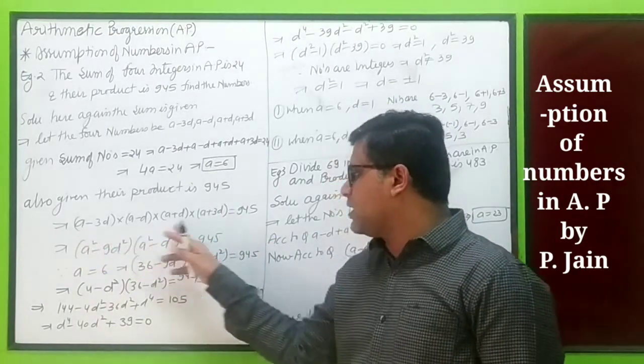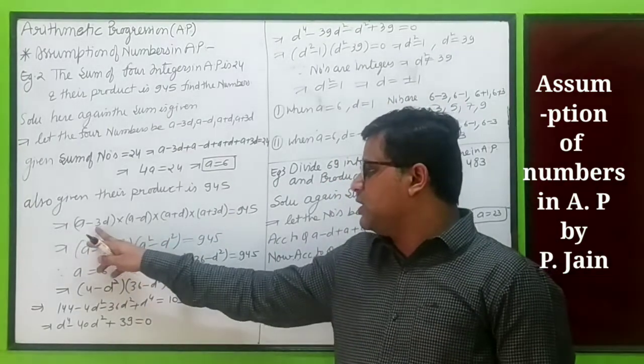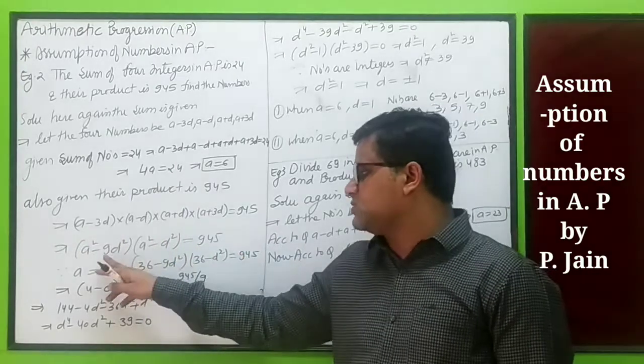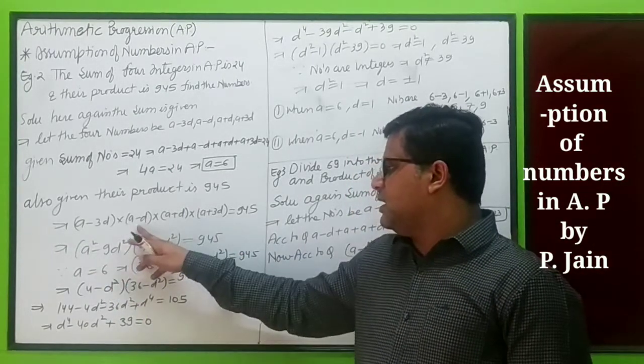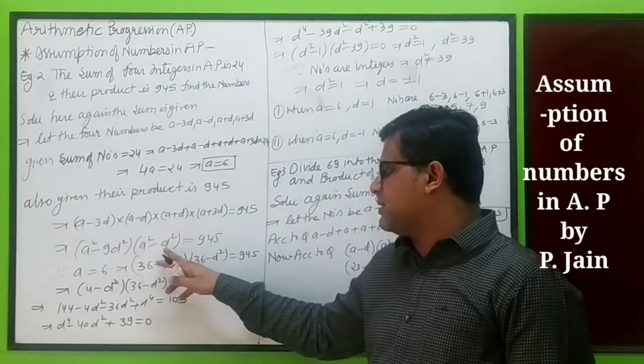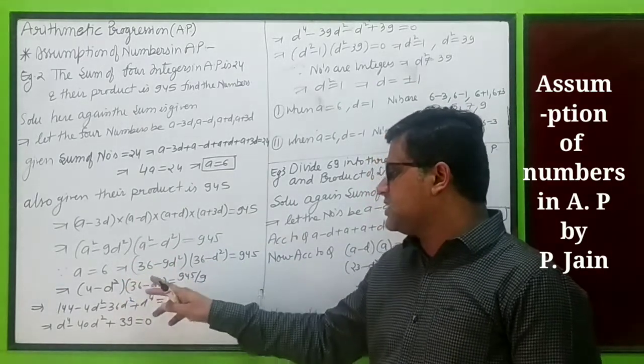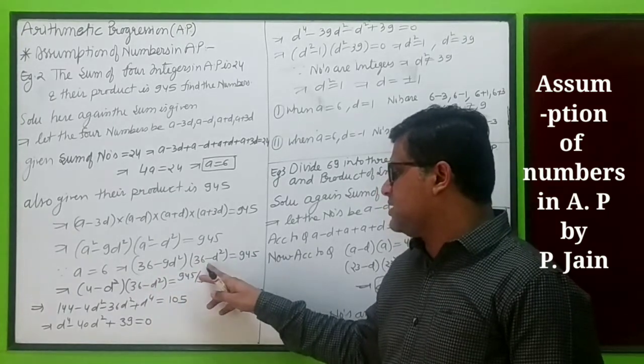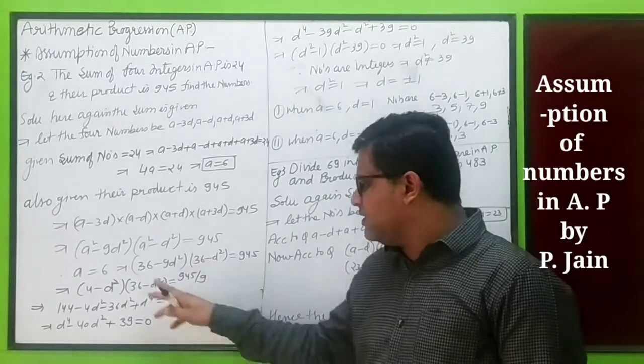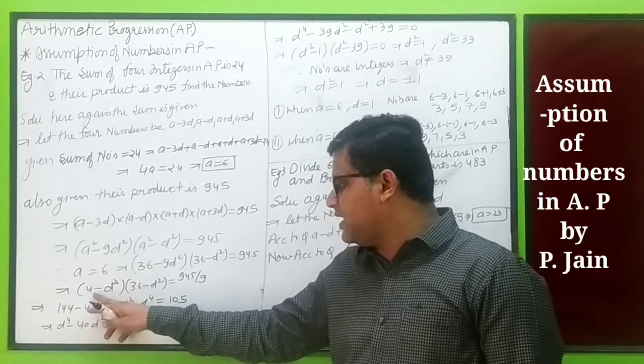Now given their product is 945, so (a minus 3d)(a plus 3d)(a minus d)(a plus d) equals 945. This becomes (a squared minus 9d squared)(a squared minus d squared) equals 945. Putting a equals 6: (36 minus 9d squared)(36 minus d squared) equals 945. We can take 9 common from the first factor.